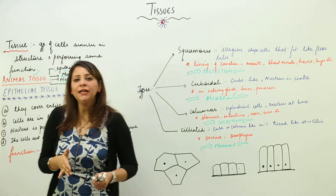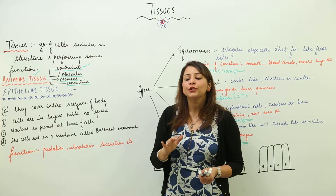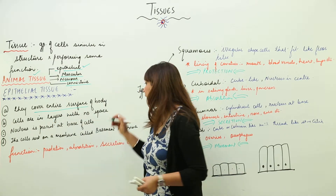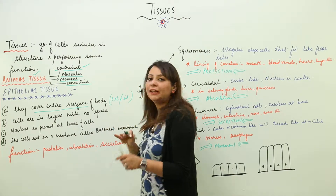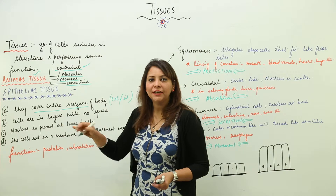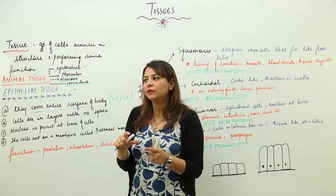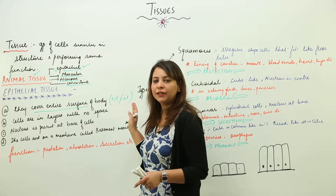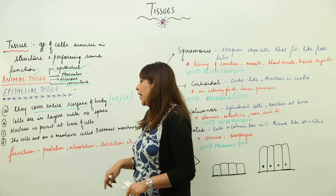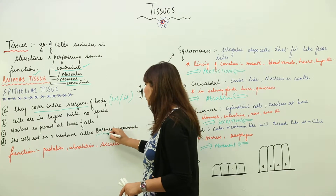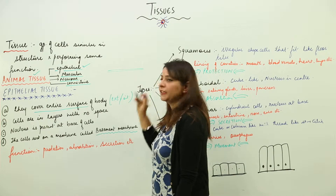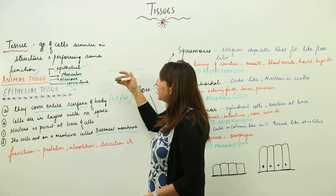The first tissue we are going to study is epithelial tissue. Epithelial tissue forms the covering — it covers the entire surface of the body whether externally or internally. It forms the lining of the body and organs. The cells are arranged in layers, and they rest on a special membrane called the basement membrane, which provides support to the cells.